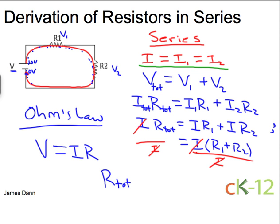R total, that is the total resistance of the circuit, is simply equal to the addition of all the resistors in series.